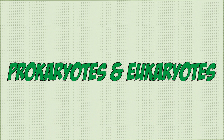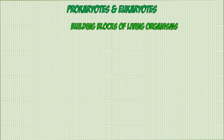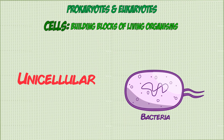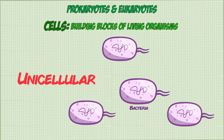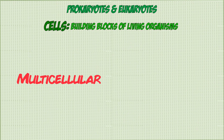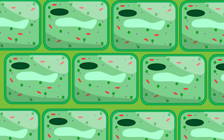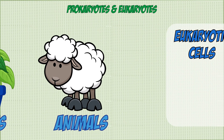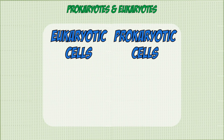First let's look at prokaryotes and eukaryotes. All living organisms are made out of building blocks known as cells. Some organisms like bacteria are unicellular, meaning every individual cell is an independent organism. Others are multicellular, which means the organism is made out of millions of cells working together. Examples of these are plants and animals. Every single organism can be classified into two groups: eukaryotes or prokaryotes.